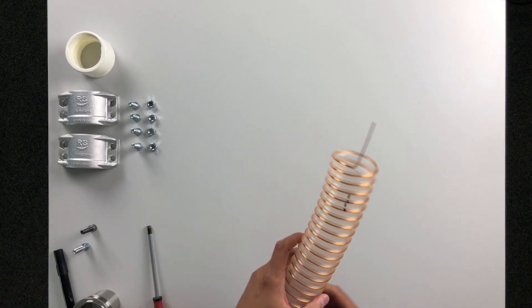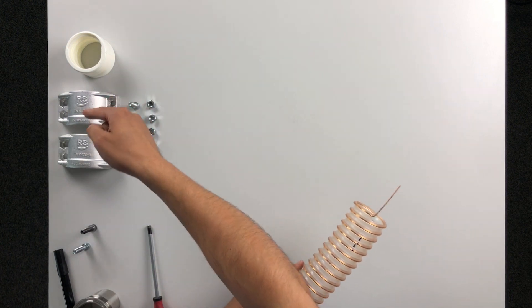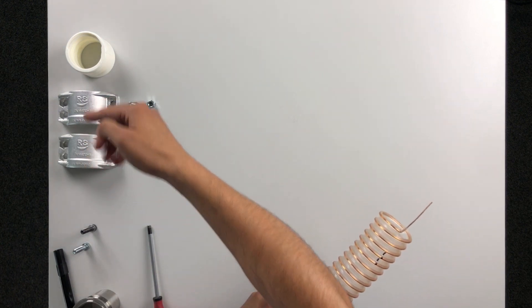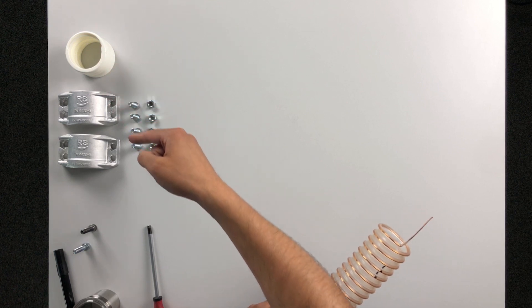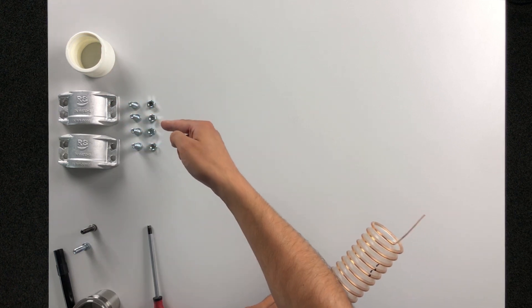The shell binding system consists of two clamping shells, a sealing insert, four screws and four nuts.